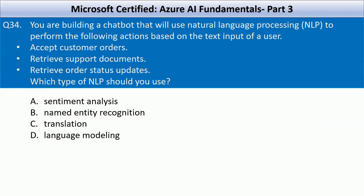Next question: You are building a chatbot that will use natural language processing to perform the following actions based on the text input of a user: accept customer orders, retrieve support documents, retrieve order status updates. Which type of NLP should you use? Your options are sentiment analysis, named entity recognition, translation, and language modeling. You should make use of named entity recognition, as it is an NLP technique used to identify and categorize key entities in text such as product names, order numbers, customer names, and support topics.